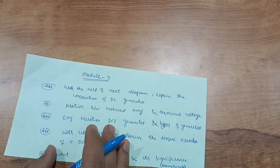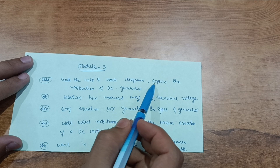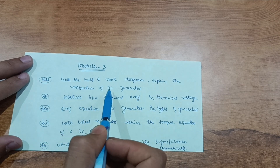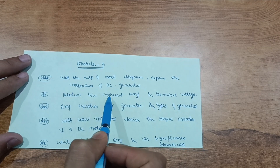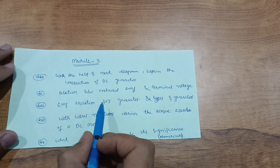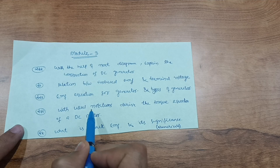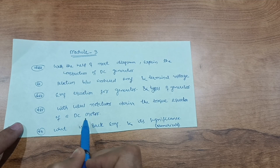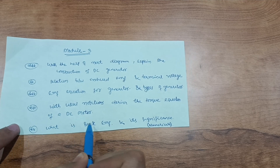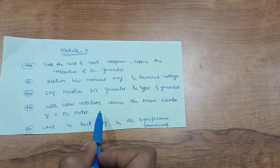Module 3 covers some theory questions. With the help of a neat diagram, explain the construction of a DC generator, the relation between induced EMF and terminal voltage, the EMF equation for a generator, and types of generators. Also derive the torque equation of a DC motor with usual notations, and cover what is back EMF and its significance, along with some numericals.